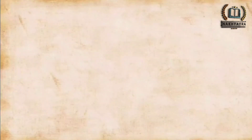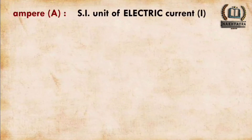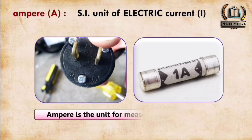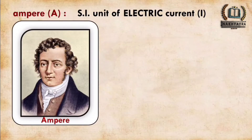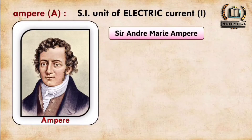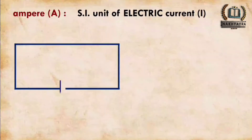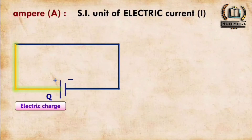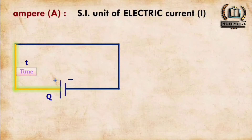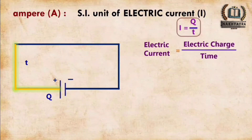Next is ampere — it is the SI unit of electric current. Ampere is the unit for measuring electric current, and the word ampere is derived from the scientist Sir André-Marie Ampère. In a circuit where a cell is connected and electric charge flows in time t, we know that electric current I = Q/t.